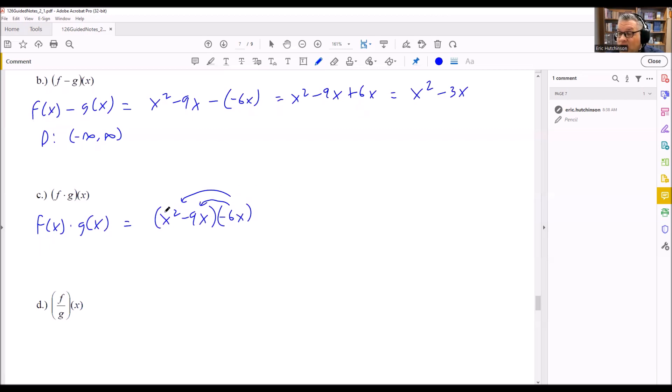We're going to take negative 6x times x squared. So we're going to get negative 6x cubed. Then we're going to take negative 6x times negative 9x. That's going to be plus 54x squared we get. Because we're adding the exponents there.